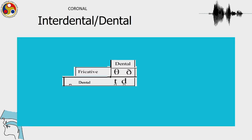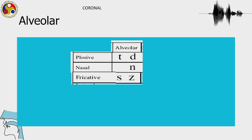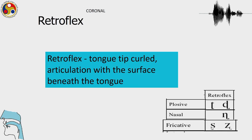After labial, the place of articulation we talked about is that of coronals. In the coronal series, we talked about interdental and dental sounds. These are the symbols — the fricatives used for these sounds. The stops use a diacritic beneath the symbol to show the dental place of articulation. For alveolar, we have commonly used Roman IPA symbols, and also the alveolar nasal and fricatives. We also just talked about retroflexes, which are produced with the tongue tip curled and articulating with the post-alveolar region.